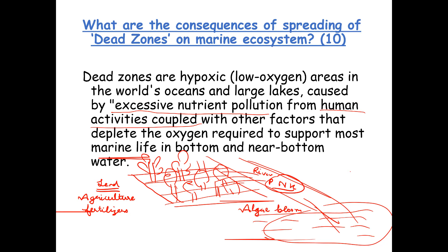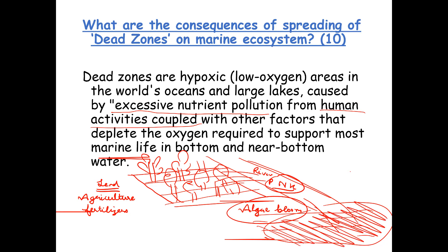An algae bloom happens and the area turns green. Over time, this algae dies, and then bacteria eat the algae and absorb the oxygen inside the water. A fish living in that water will no longer have enough oxygen to live. Even a fish swimming in from farther away and entering this dead zone will just die.